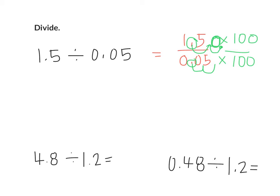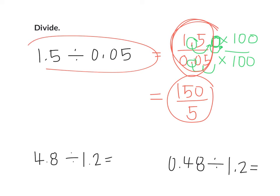So then what's the new version of this fraction? 150 over what? 5. Does this have the same value as this? Does it have the same value as this? Yes. So let's simplify it. What's 150 divided by 5? 30. So what's 1.5 divided by 0.05? 30. Very nice.